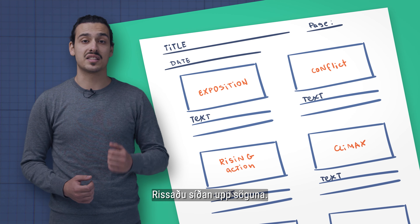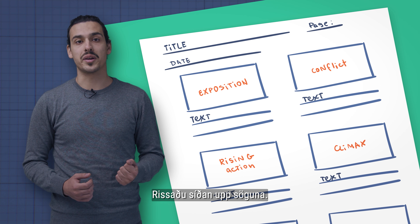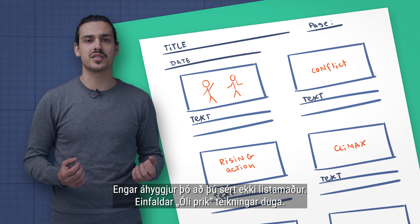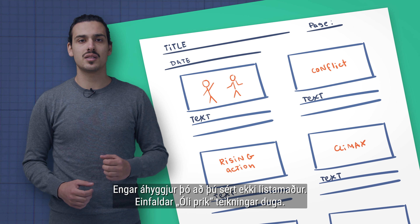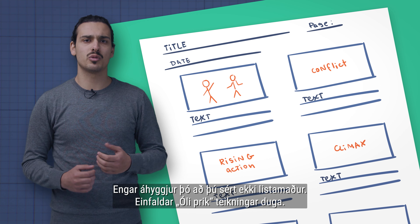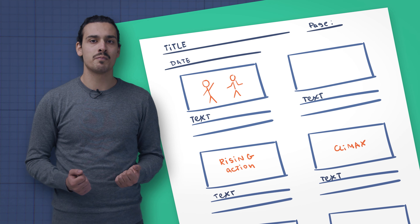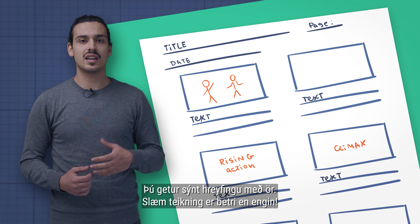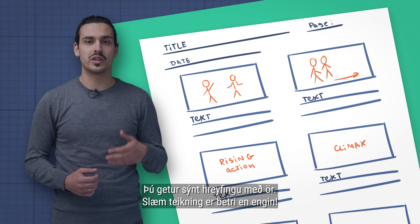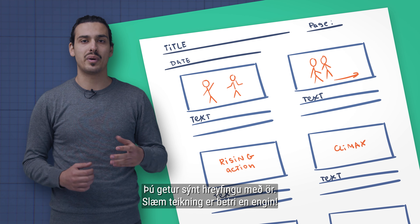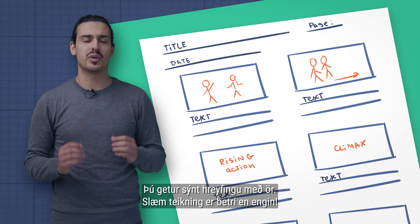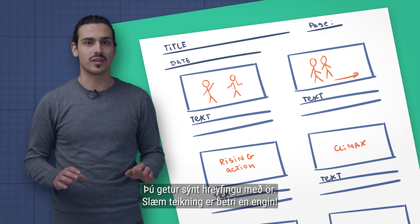Then sketch out the story. Don't worry if you're not an artist — simple stick figures will do the trick. You can indicate movement with an arrow. A bad drawing is better than no drawing.